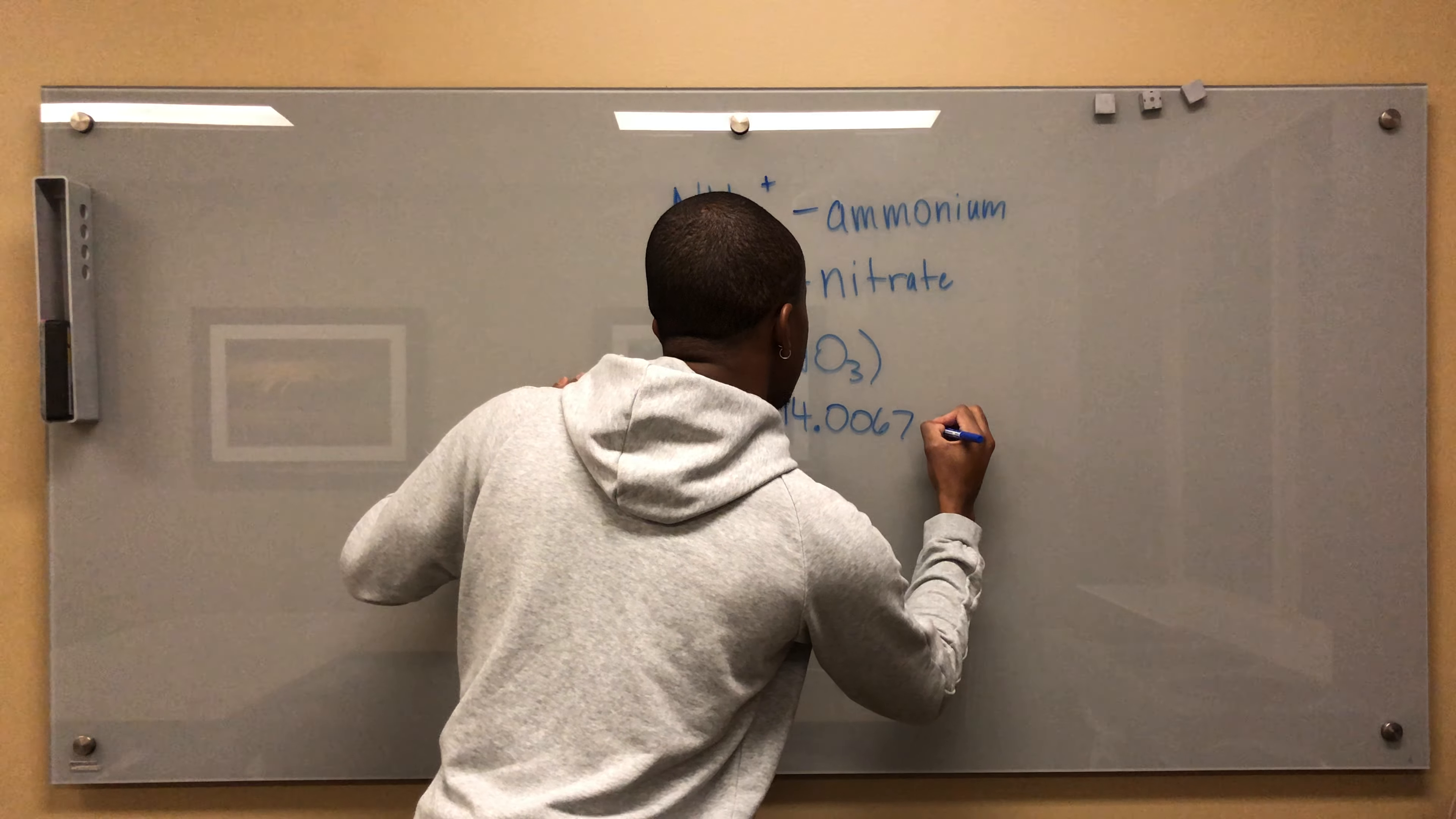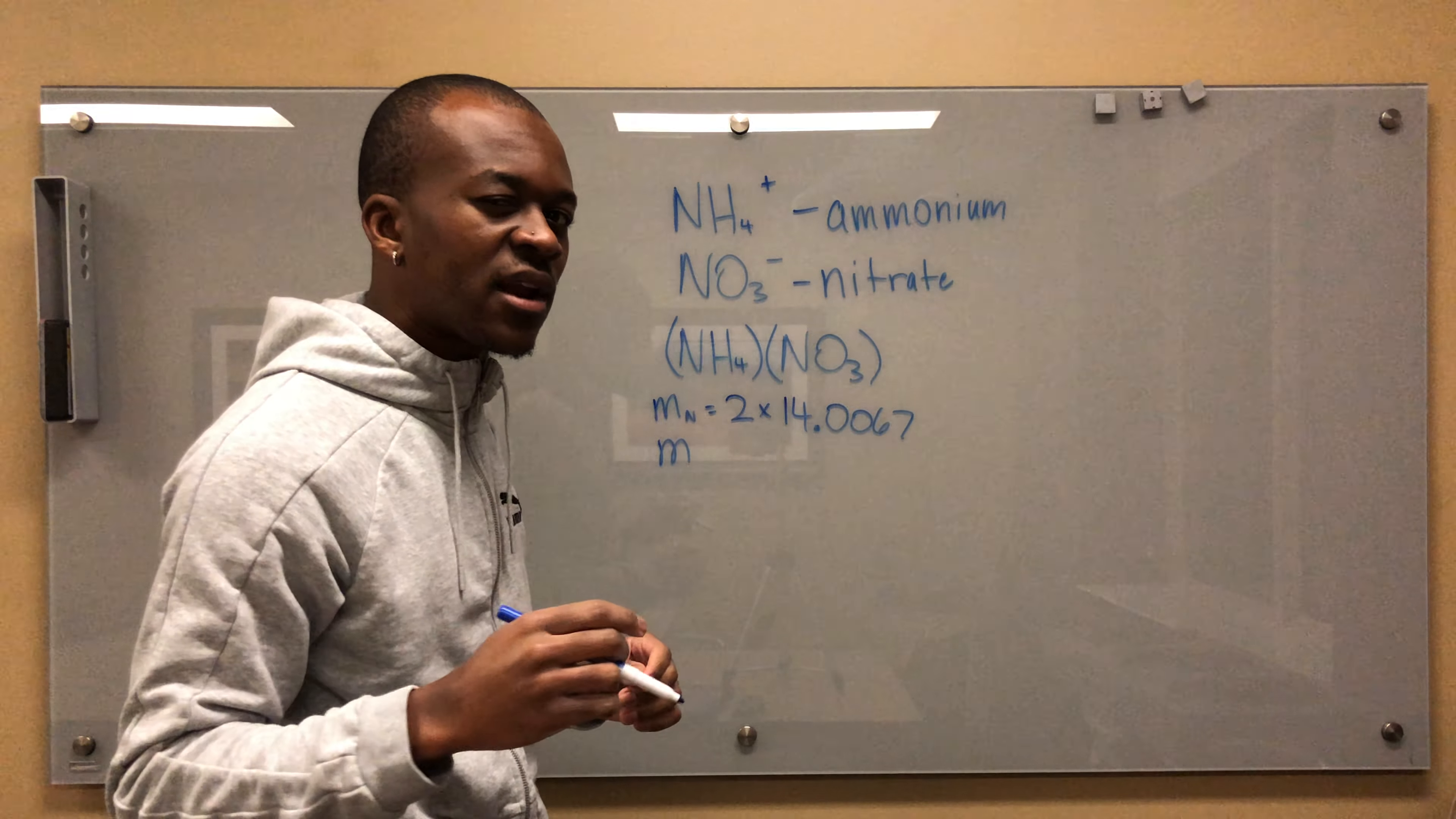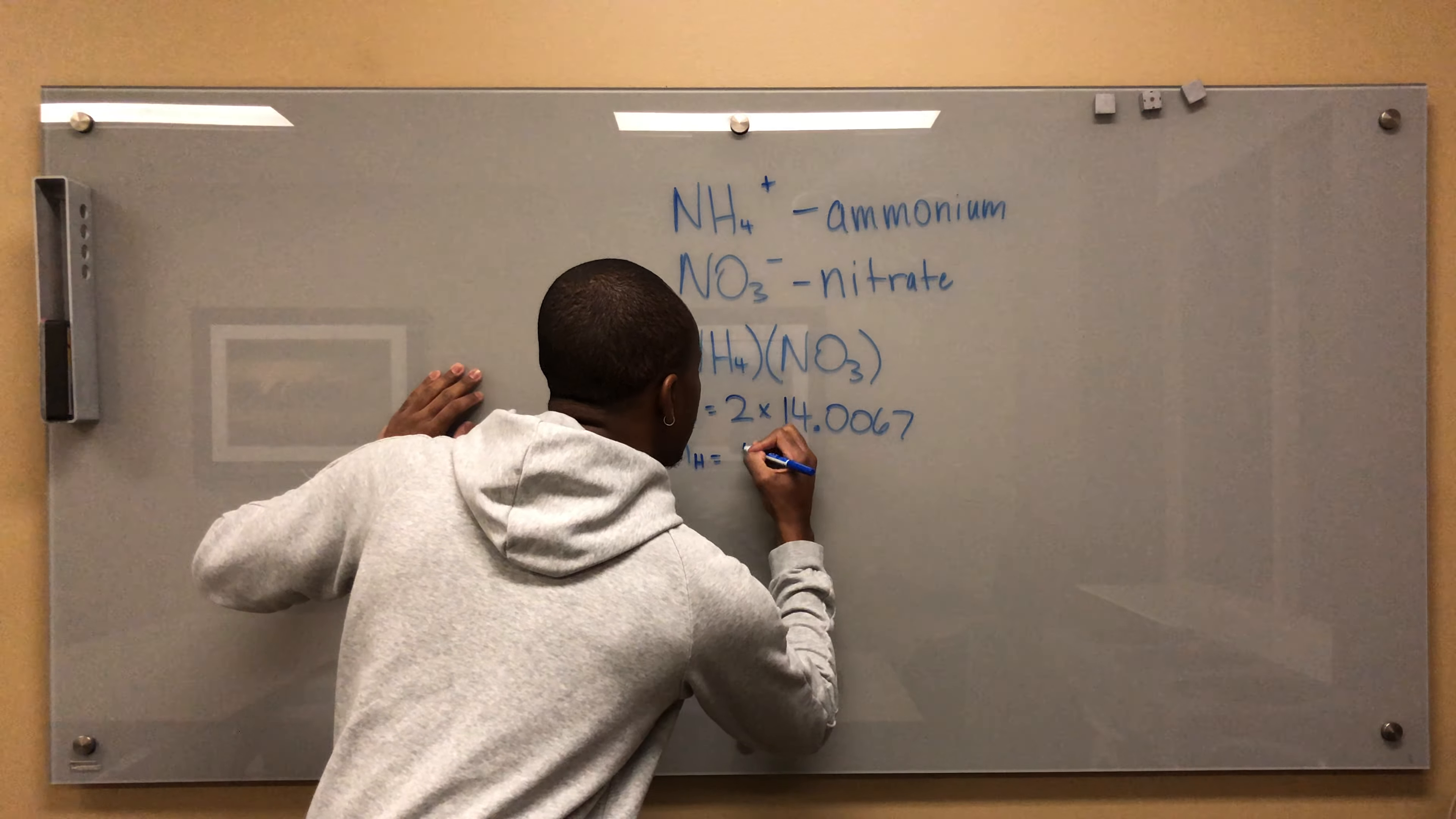I'm not sure what the unit is - it might be amu, but I don't want to write the wrong unit. It doesn't really matter because we're asking for a percentage, so we're going to divide by the same unit and it will cancel out. Mass of H is going to be four. The reason I did two for nitrogen is because there's one nitrogen here and one nitrogen there.